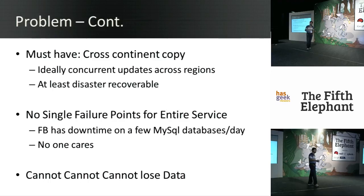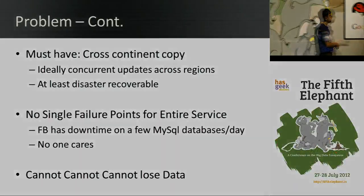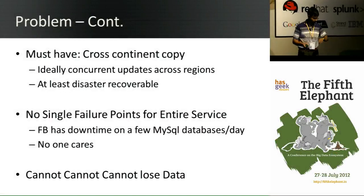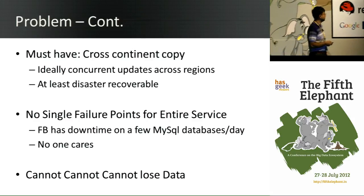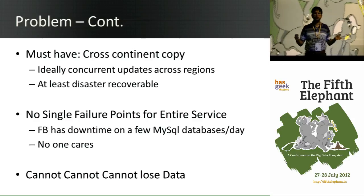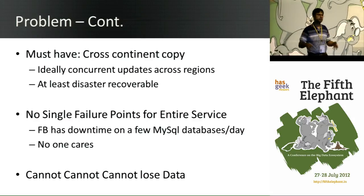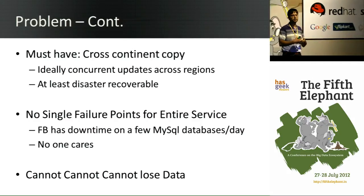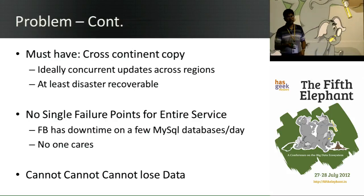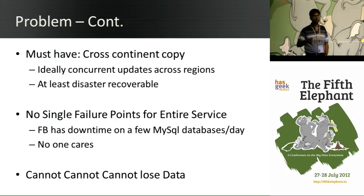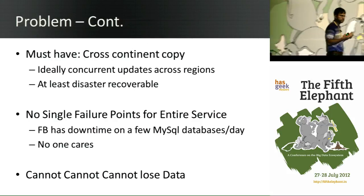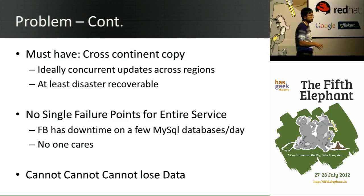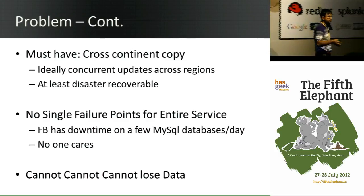Beyond the scale and volume of data, these are standard requirements for any company: we want data replicated to a remote data center so it's available if the primary goes down. Ideally, we want to concurrently update data from different data centers so that whether you're logging in from India, Europe, or America, you hit the data center closest to you and updates can happen there. This is where it gets really hairy — concurrent updates are very hard. At minimum, we want a copy of data somewhere else so that in case of disaster we can recover.